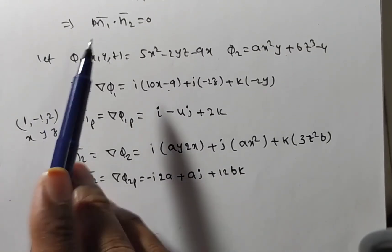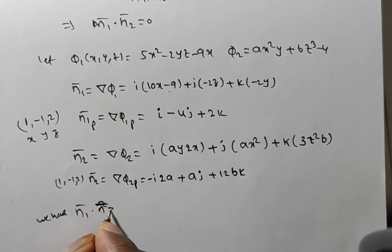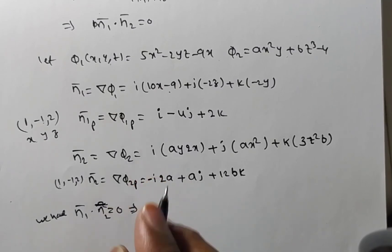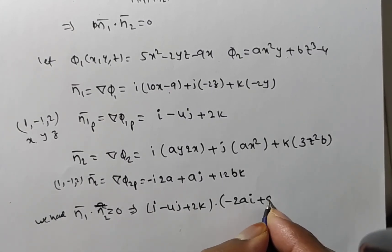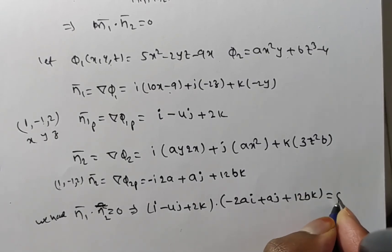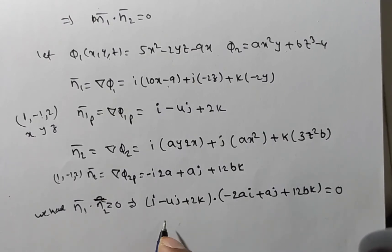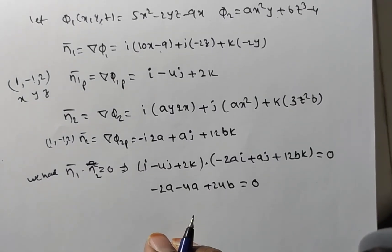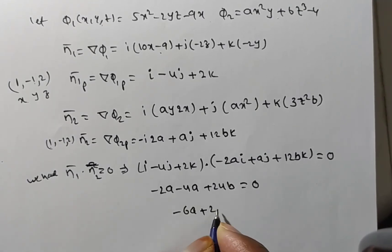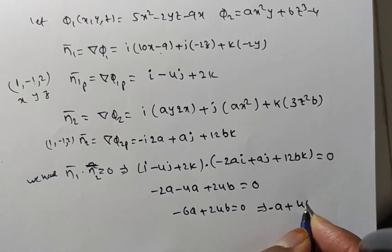From the orthogonality condition, N1 · N2 = 0. So (i - 4j + 2k) · (-2ai + aj + 12bk) = 0. Computing: (1)(-2a) + (-4)(a) + (2)(12b) = -2a - 4a + 24b = -6a + 24b = 0. Dividing by 6: -a + 4b = 0, giving a = 4b.